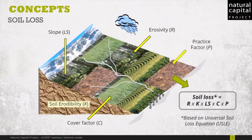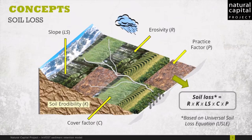Moving clockwise on this slide, this approach considers the erosivity of the rain — the rain intensity — and the practice and cover factors, which depend on the land-use land cover. Then the soil erodibility, which is the potential for a given soil to actually erode with rain, and then the slope of the particular area.